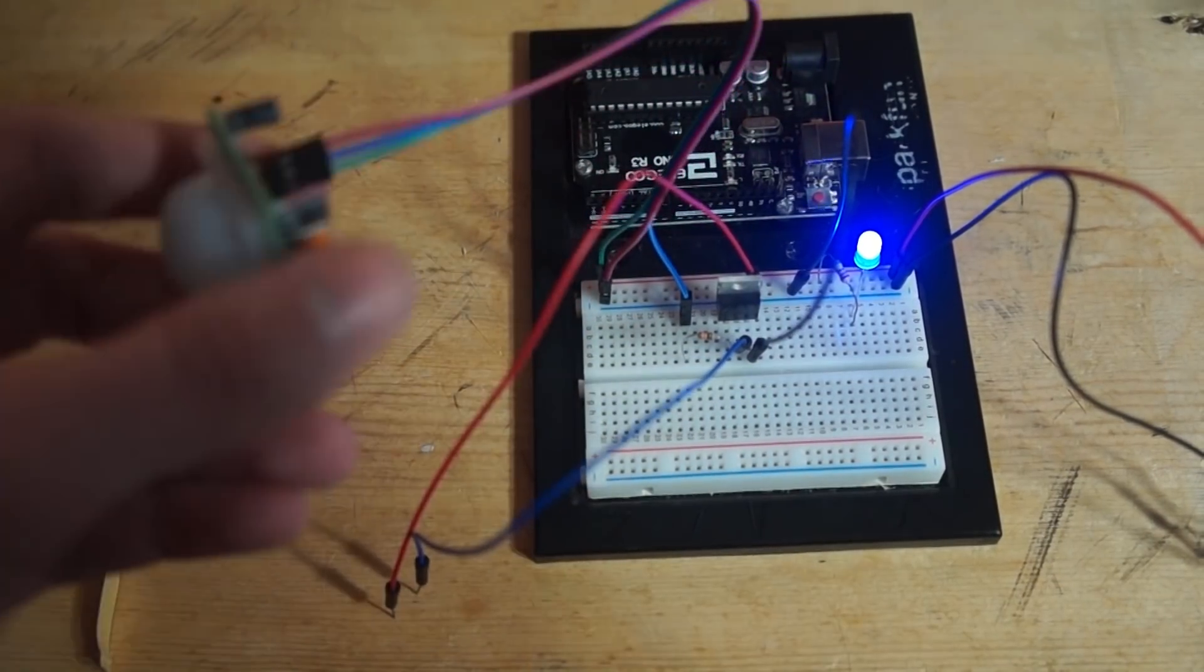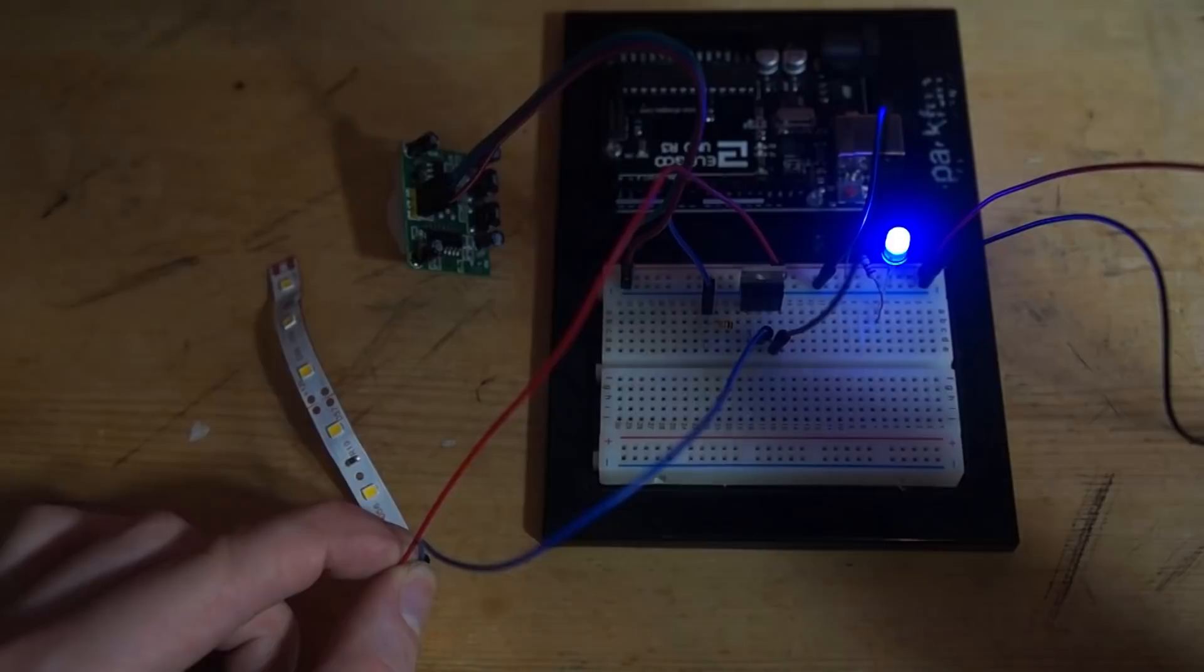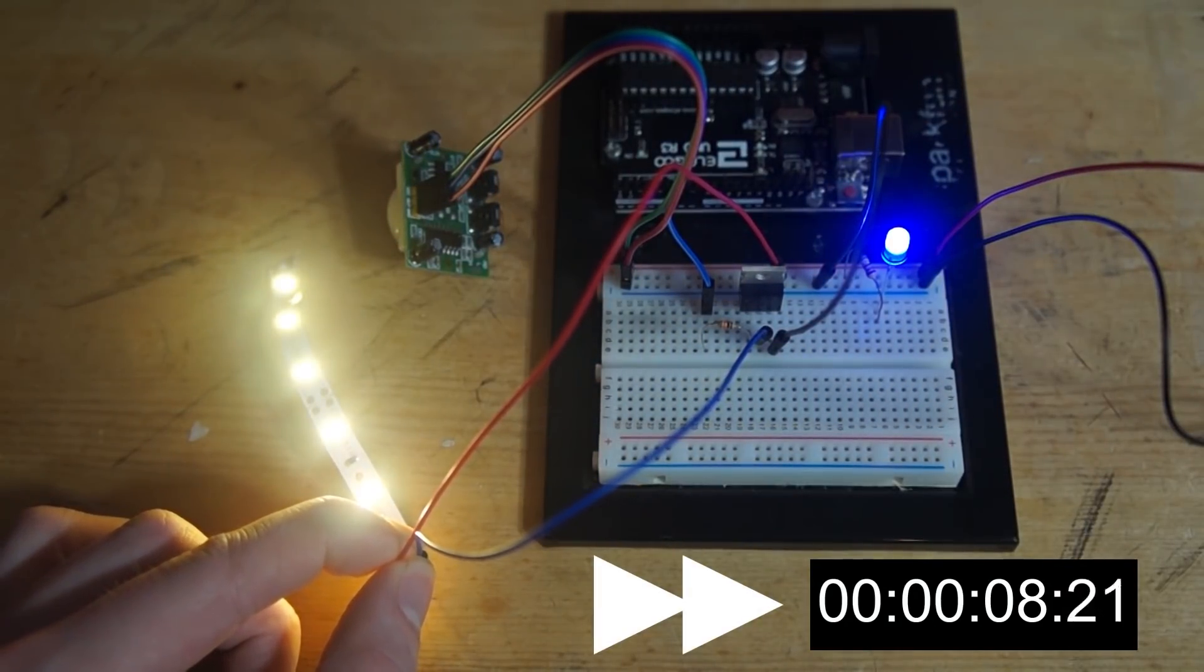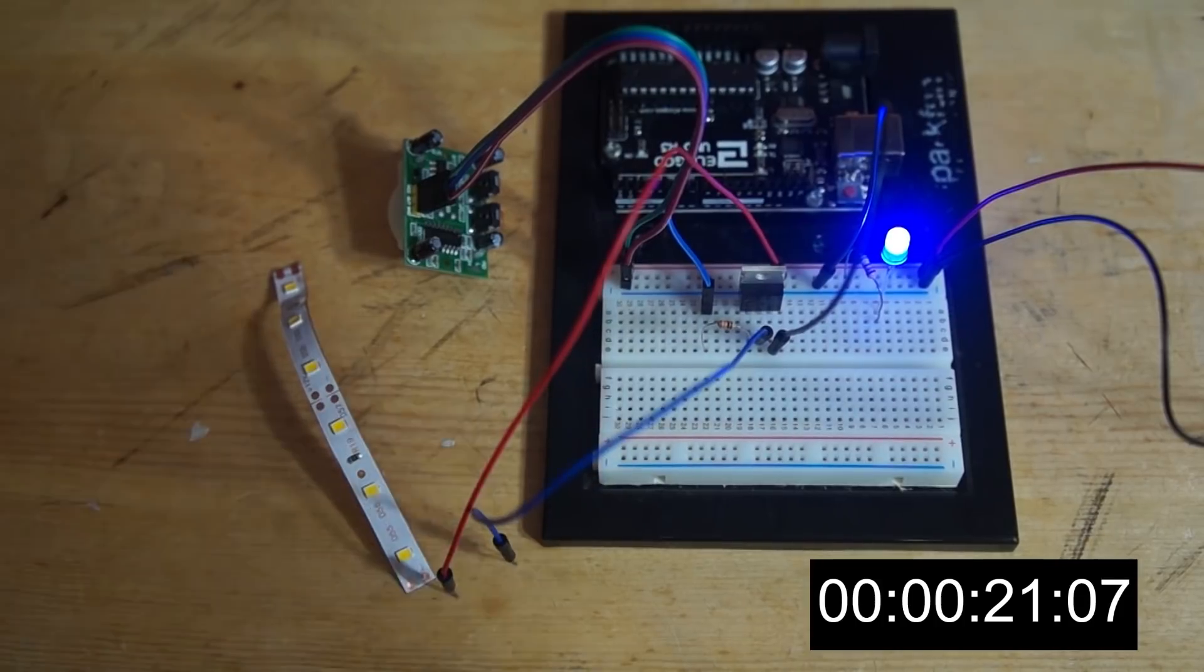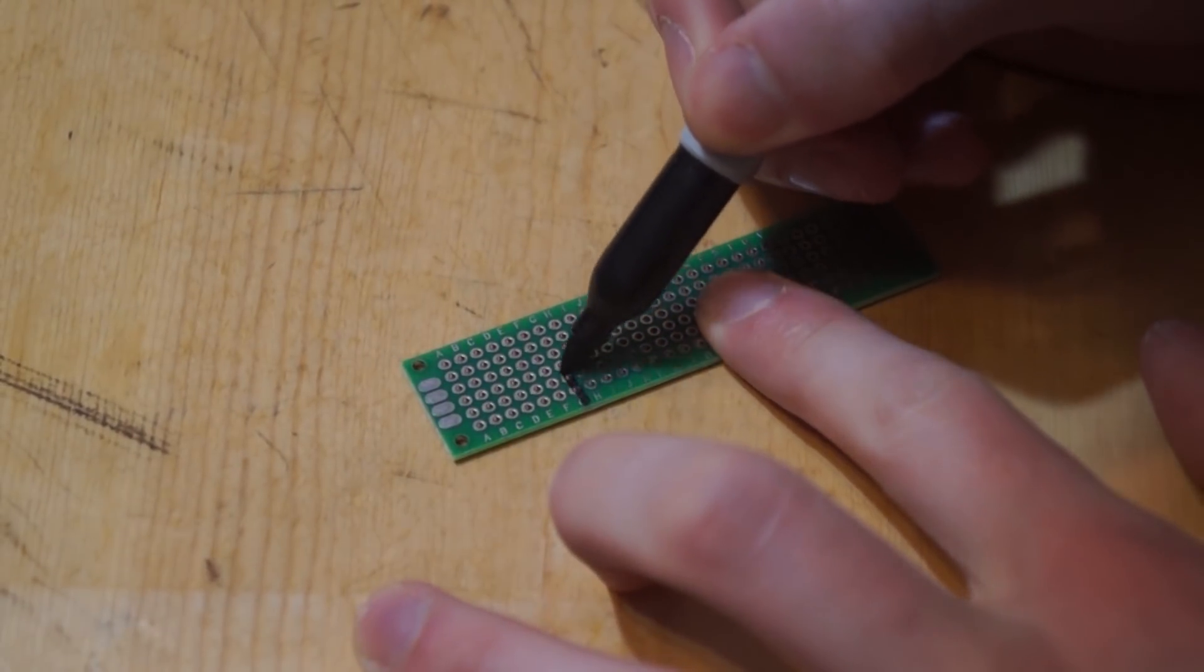Now I'm going to take this and I'm going to rotate it clockwise to lengthen the time delay. I move it about 10 degrees and let's see how long it takes for the LED to turn off. So just by that small turn it shows that it lengthened the time delay up to 21 seconds.